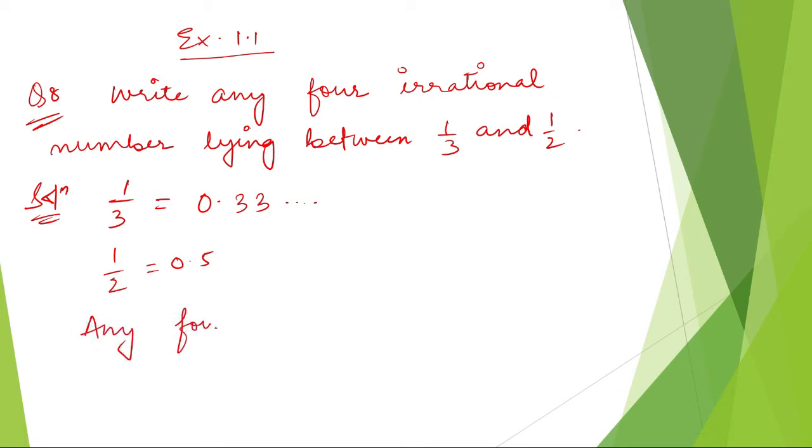Any four irrational numbers are: The number must be greater than 0.33 and must be less than 0.5. There are infinite numbers between 0.33 and 0.5. Out of those infinite numbers, you can write any four. With my choice, let me write down 0.4143420015 and so on.